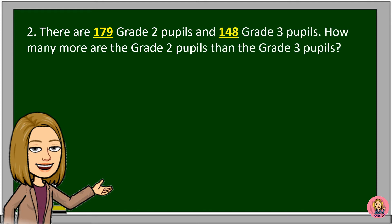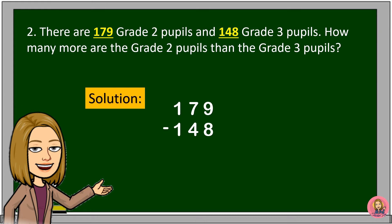There are 179 grade 2 pupils and 148 grade 3 pupils. How many more are the grade 2 pupils than the grade 3 pupils? We will subtract 148 from 179. 9 minus 8 is equal to 1. 7 minus 4 is equal to 3. 1 minus 1 is equal to 0. It's okay not to put the 0 because 0 is a placeholder.